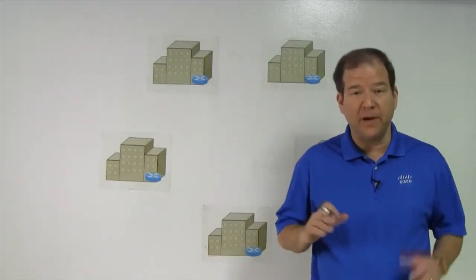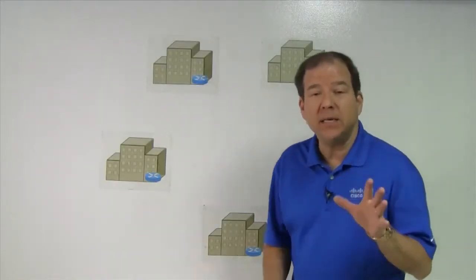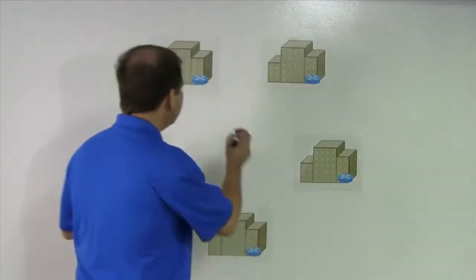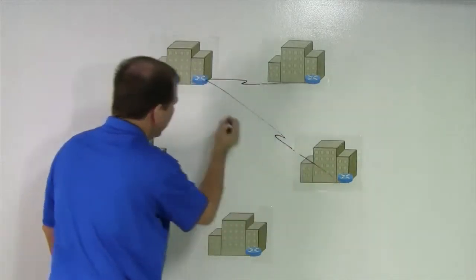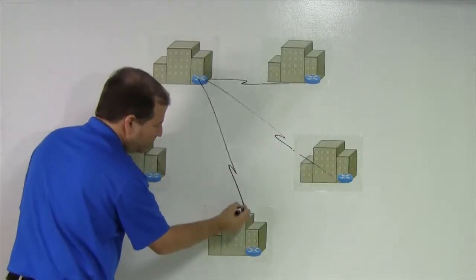One approach to interconnecting various WAN locations is to connect every site to every other site. So I've got this first site, it's got a link going to every other site.